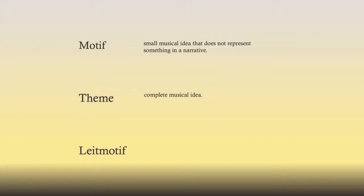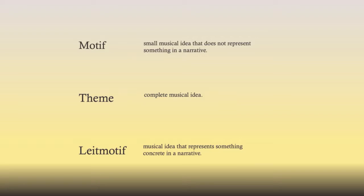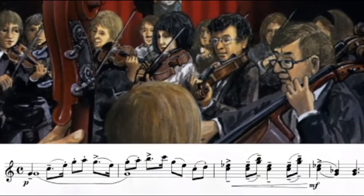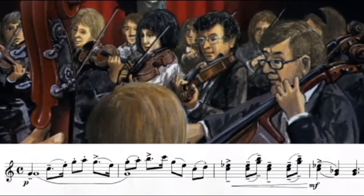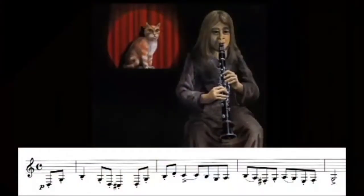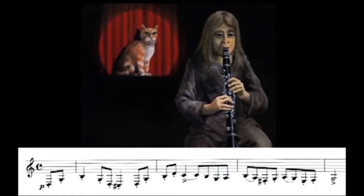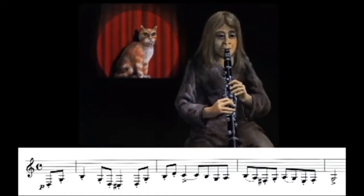A leitmotif is a little bit different. It's the idea that a musical idea represents something concrete in a narrative — something specific. So if you were to think of Peter and the Wolf, where you have a story told with every single character represented by an instrument: you'll have a violin playing Peter, the cat having an instrument, the duck with an instrument, and the grandfather with a specific instrument.